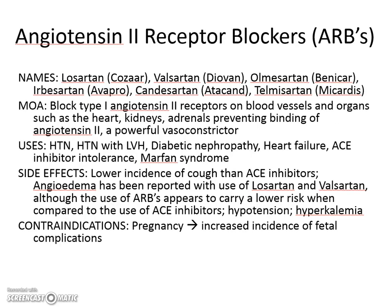Your ARBs, or angiotensin 2 receptor blockers, are similar in mechanism to the ACE inhibitors in that they prevent the action of angiotensin 2 from occurring. Without angiotensin 2 having an effect on the receptors, you reduce the vasoconstrictive properties of angiotensin 2, reducing hypertension. These ARBs are your sartans: losartan, valsartan, olmesartan, irbesartan, candesartan, and telmisartan.